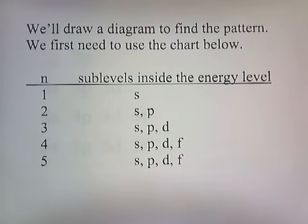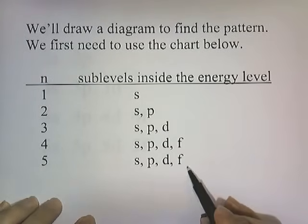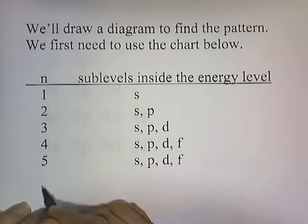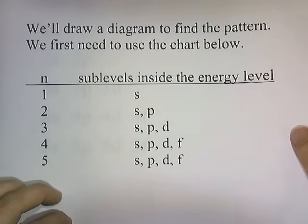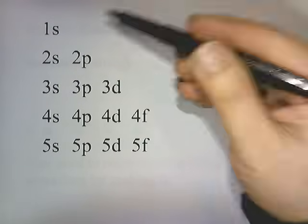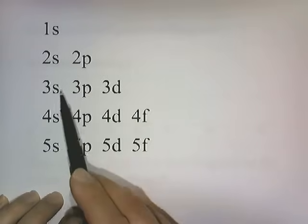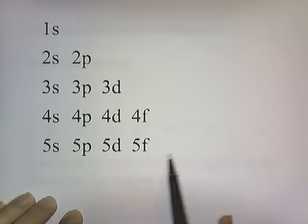We're going to use a diagram to find the pattern, using the chart from the previous lecture. The first energy level has S. The second has S and P. The third has S, P, and D. The fourth has S, P, D, and F. And after that, we write S, P, D, and F — so the fifth has S, P, D, and F. Usually you don't go any further than F.